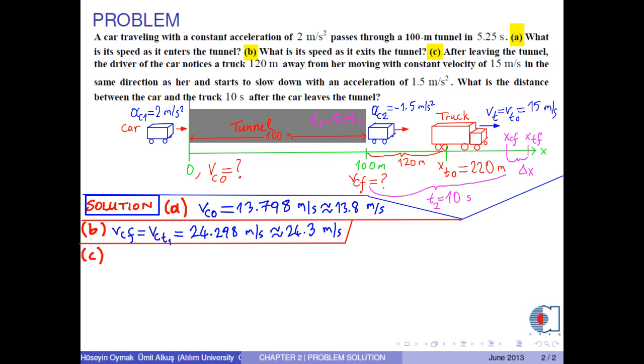To solve Part C, first we find the position of the car 10 seconds after the car leaves the tunnel. If we substitute the corresponding numerical values into this equation, we obtain 267.98 meters.